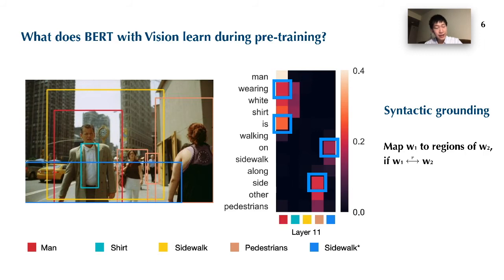In addition to entity grounding, we find that non-entity words can also attend to image regions. For example, the word wearing is attending to the man, which is its subject. The word on is attending to the sidewalk, which is its object. We call this behavior syntactic grounding.